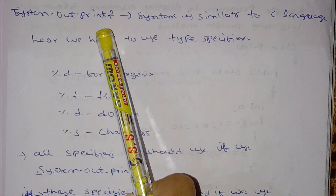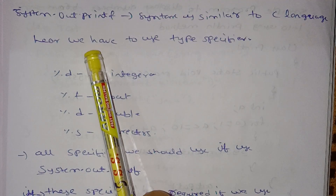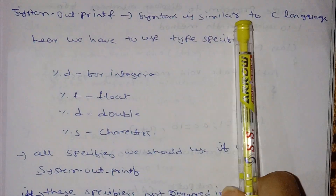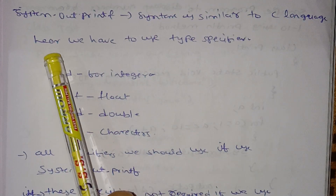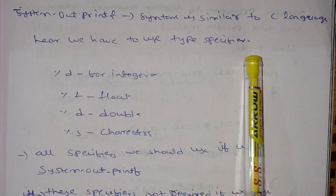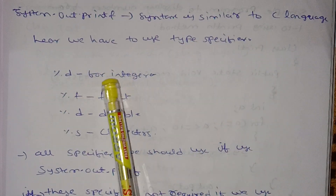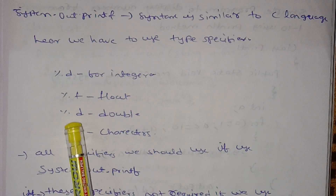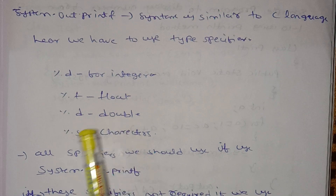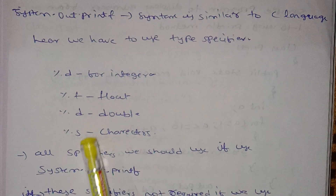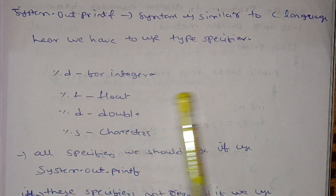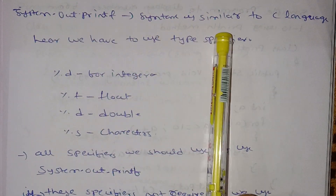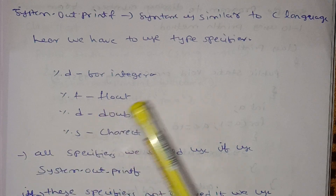system.out.printf — the syntax is similar to the C language. Here we have to use format specifiers: %d for integers, %f for float, %d for double, and %s for characters.